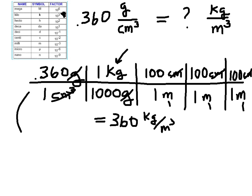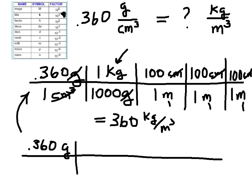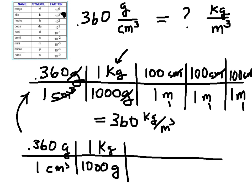Now let me show you this whole conversion in a simpler way. The beginning is the same: 0.36 grams per cubic centimeter. I'm still going to convert grams to kilograms the same way. Only now, those three steps can be put into one by doing it like this.